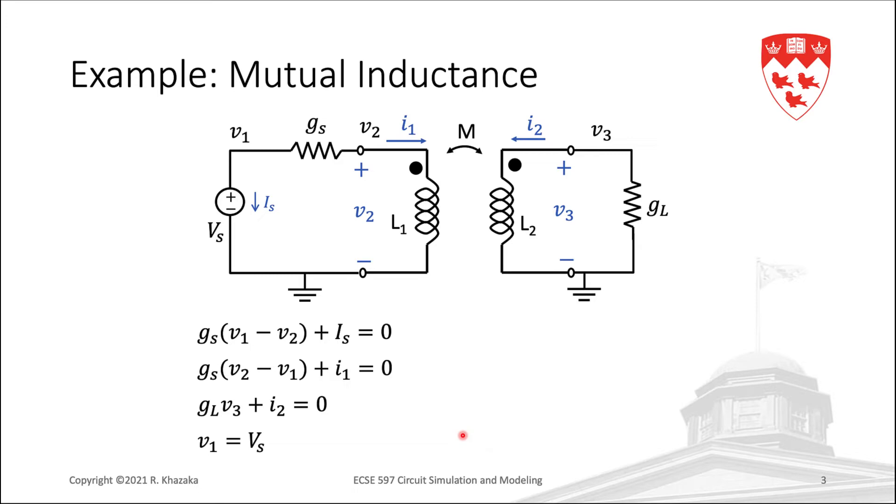The two last equations are the inductor models, including the mutual inductance. So, for inductor L1, we have V2 equals L1 Di1 by dt, plus M Di2 by dt. And for inductor L2, we have V3, L2 Di2 by dt, plus M Di1 by dt. This completes our equations.